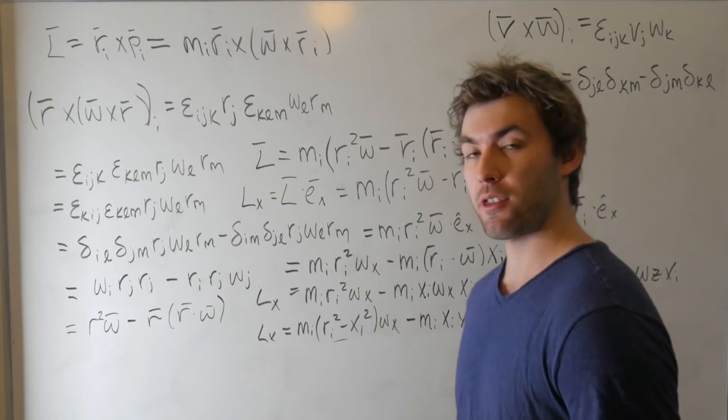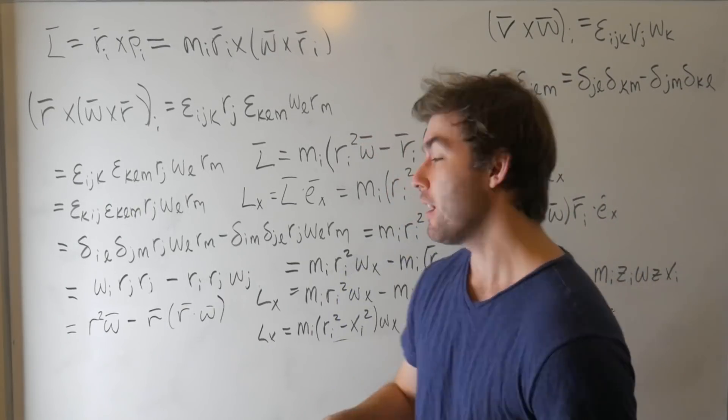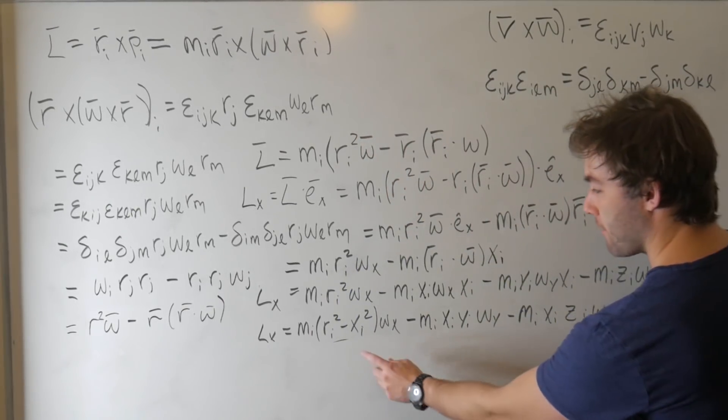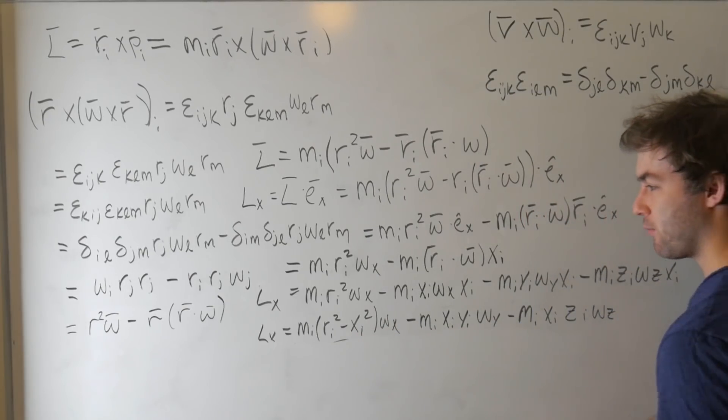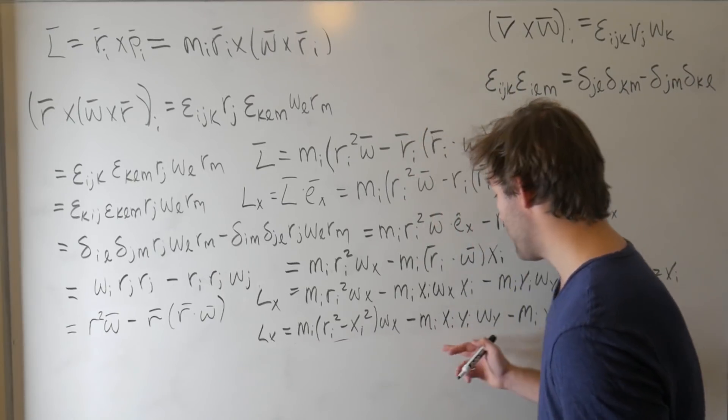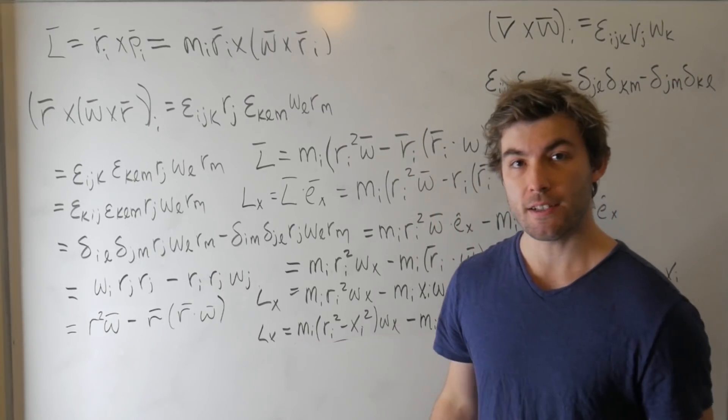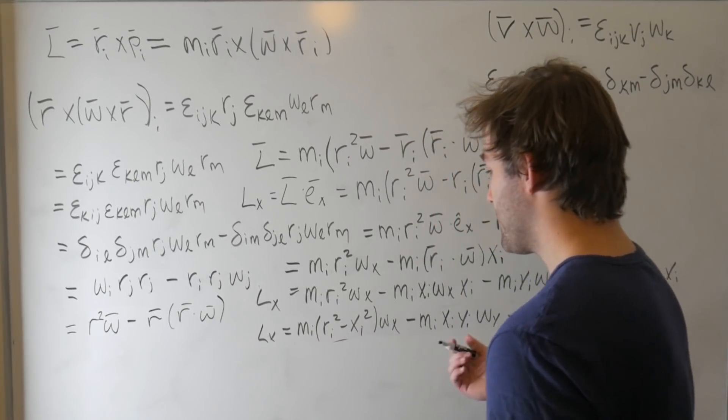One thing to note is that if we would have done L_y instead of L_x or L_z, a similar thing, a very similar thing would have happened. If we take a look at this, there's a pattern. We've got x in each term here, and then it goes x, y, z. If we were to have done L_y, y would have been in each term, and it would have gone x, y, z. So this is very predictable, and to save some marker, we can define these terms.